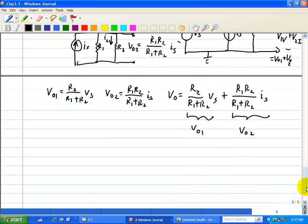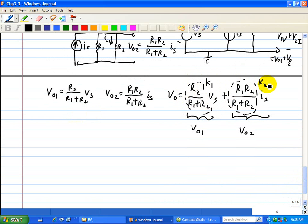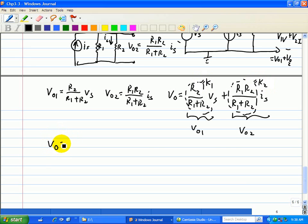Now we can rewrite this where we just have a constant right here. So we can take this constant and define that as K1, and this constant and define that as K2. Therefore, VO is K1 times VS plus K2 times IS.